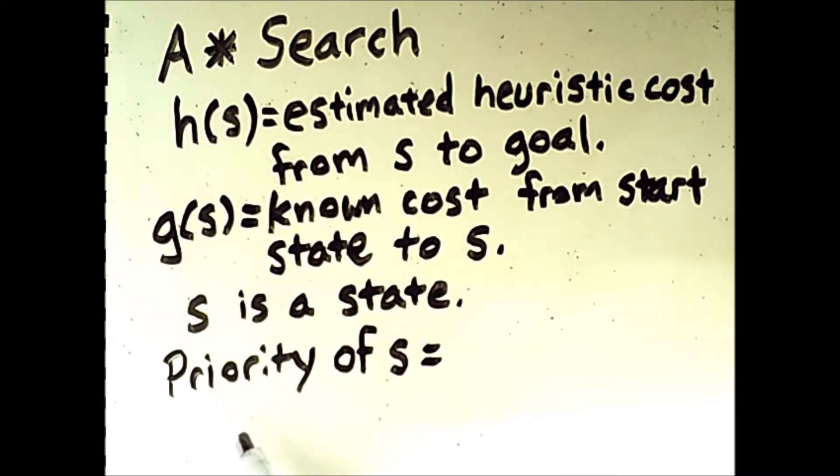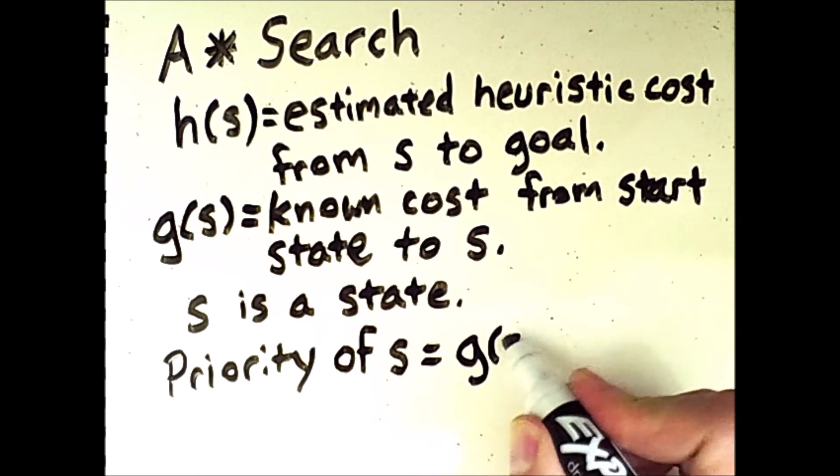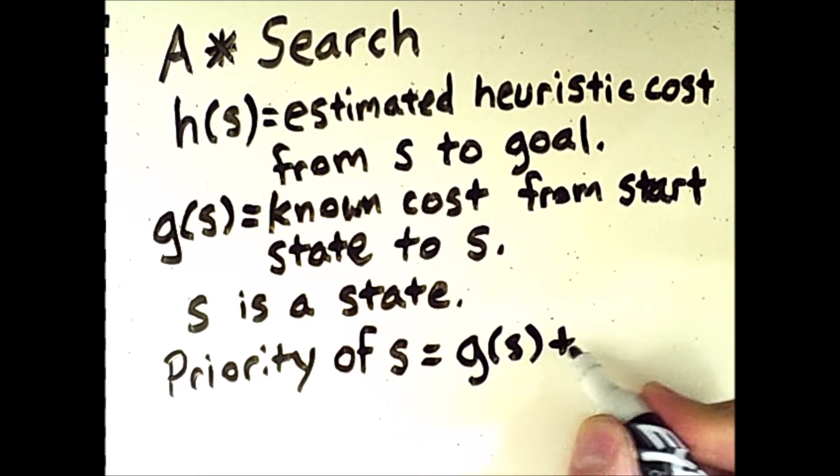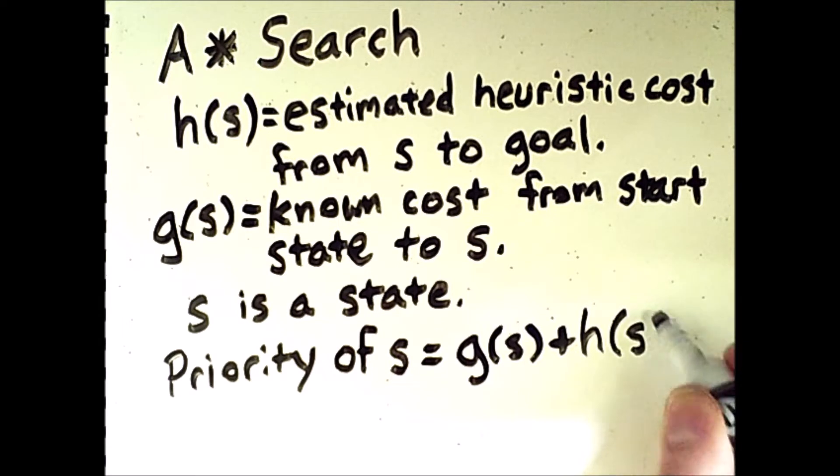In other words, the priority of s is the sum of the actual cost to reach s from the start state and the estimated cost to go from that state s onward to the goal. If h is a completely accurate heuristic, then the sum of these two values simply is the actual cost to go from the start to the goal via the state s.